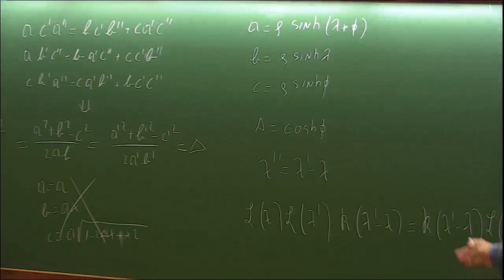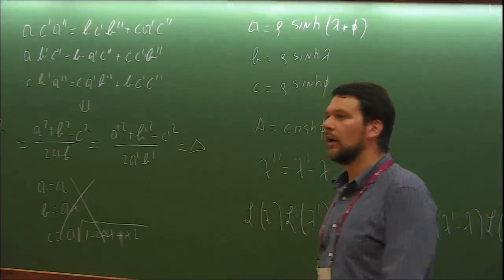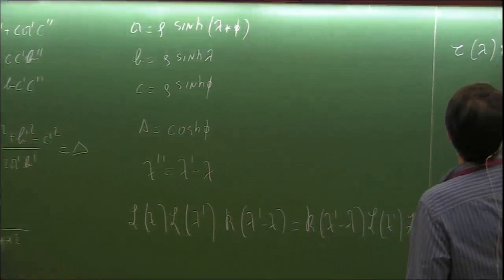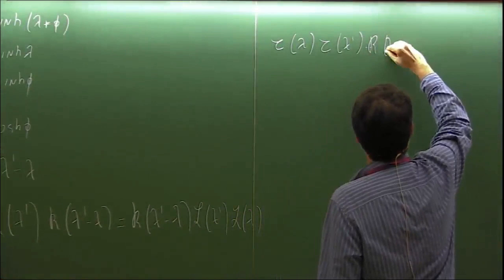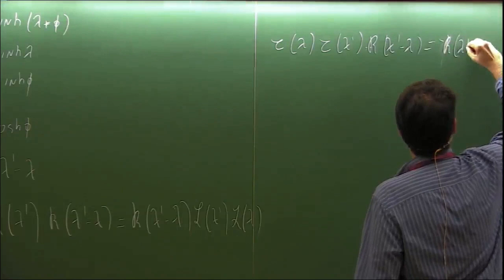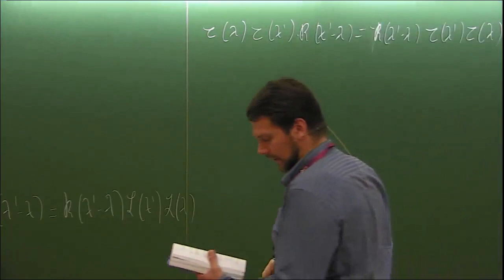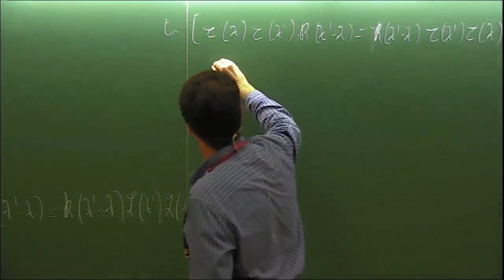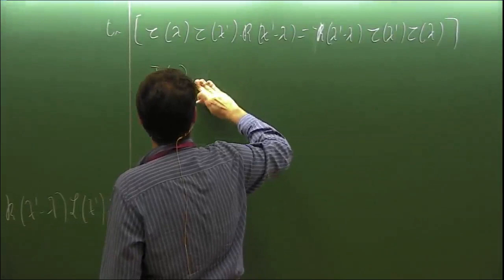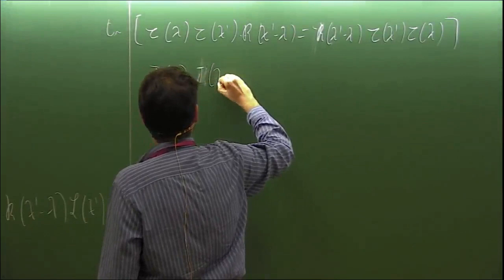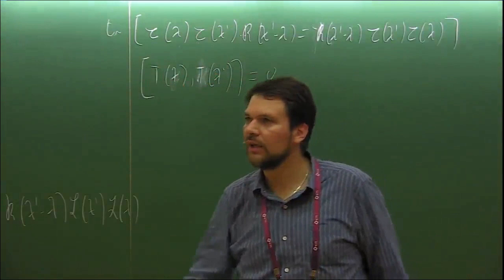Armed with this, we can construct the monodromy operator by multiplying all the L operators together, so that τ(λ) τ(λ') = R(λ' - λ) τ(λ') τ(λ). Taking the trace, you find that transfer matrices with different values of the spectral parameter commute. So you set out to solve a model with particular choices of a, b, c and have found that it belongs to a family parametrized by λ.